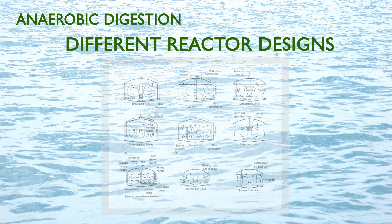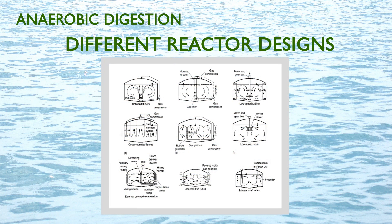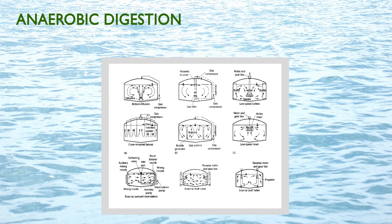A suspended-growth single-stage digester is the conventional technology applied for anaerobic sludge digestion. The sludge is fed into the digester and completely mixed. The lighter gas is collected at the reactor's top, while the sludge is reduced by 40 to 50 percent of its total solids after 30 minutes to 24 hours, depending on the loading rate.